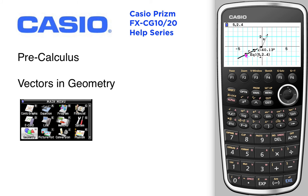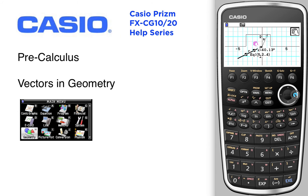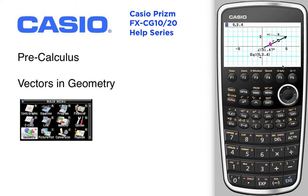We're going to select the vector, use the hand tool to move the vector up and over to its initial position at the origin at (0, 0). Then we can check — yes, indeed, 5 comma 2.4.